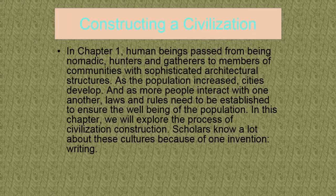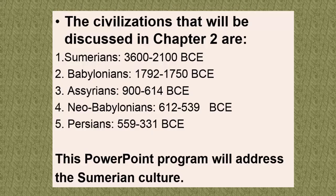In this chapter we're going to look at civilization construction, and we actually know a lot about this because we have the invention of writing. We're going to look at five civilizations: Sumerians, Babylonians, Assyrians, Neo-Babylonians, and Persians. You can see a span from 3,600 BCE — almost 4,000 BCE, which is before the Common Era — up to the Persians from 559 to 331 BCE, and they're actually contemporaneous with the Greeks.